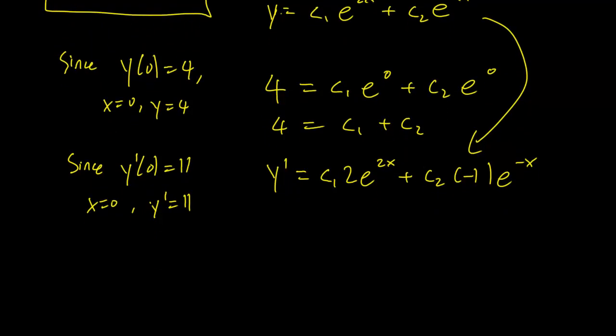And we can then apply our information here. So y prime is equal to 11 when x is equal to 0. So this is c1 times 2 times e^0 plus c2 times minus 1 times e^0. It's just going to be equal to 1, both of them. So we have 11 equals 2c1 minus c2. Let's change that to a minus to make things a bit easier, minus c2.